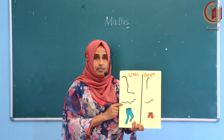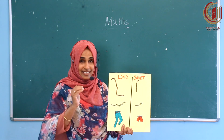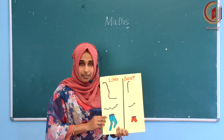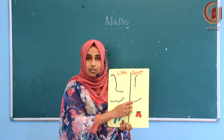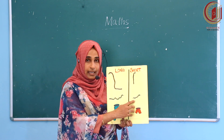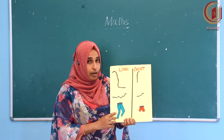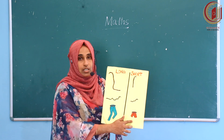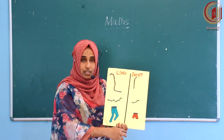What is this? This is a snake. Did you see a snake? This snake is long and this snake is short. This snake is long and this snake is short. This one is long and this one is short. Long and short. Clear?